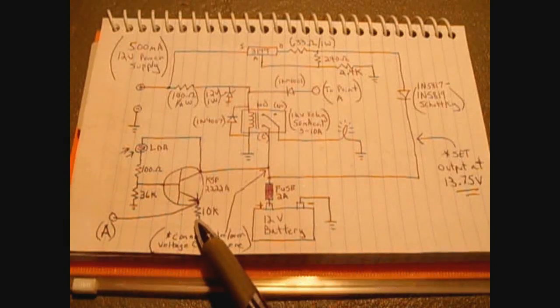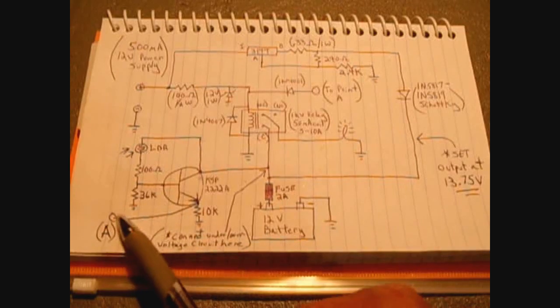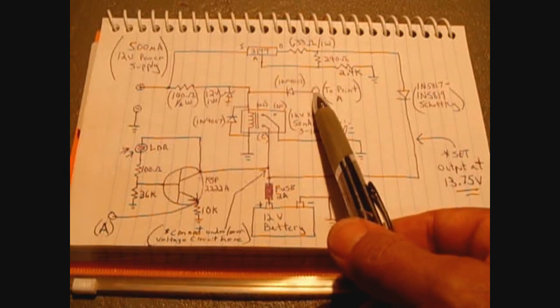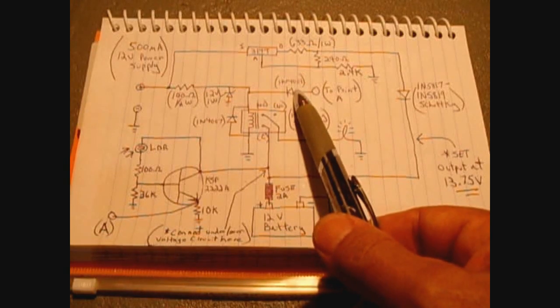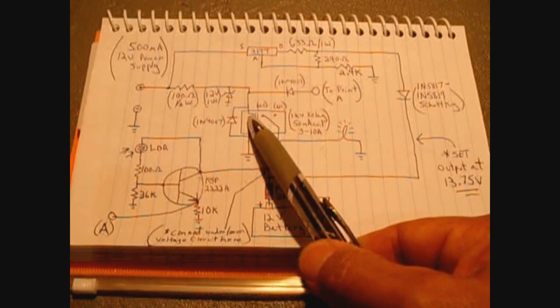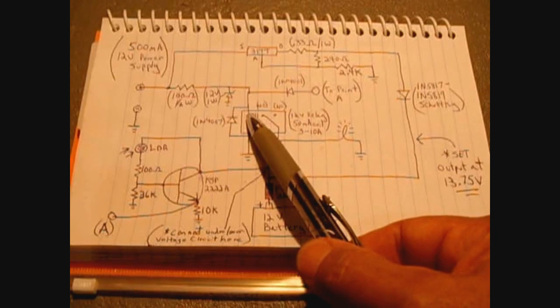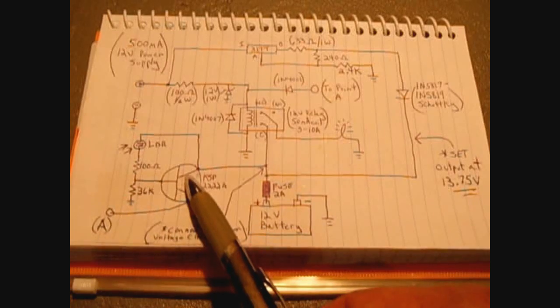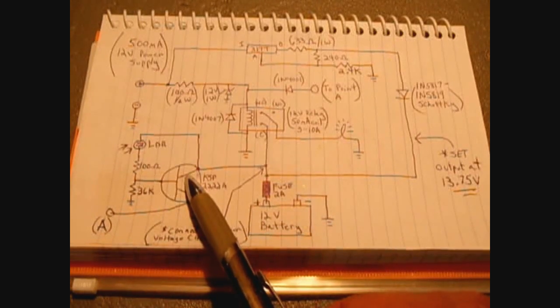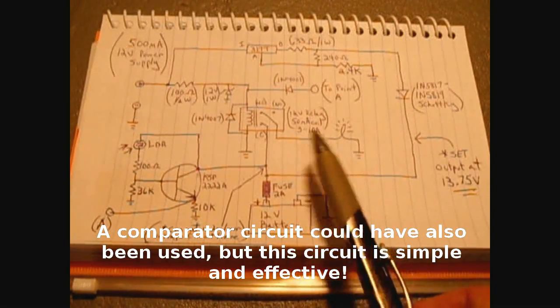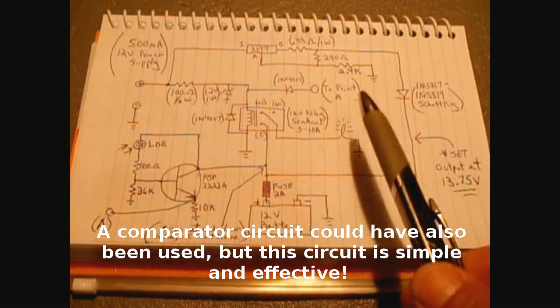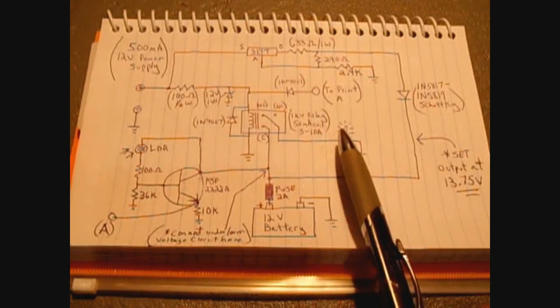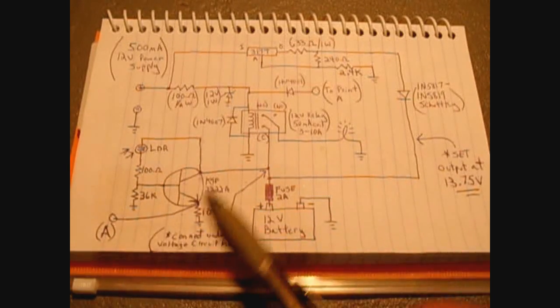Right between the 10K resistor and the emitter, that goes off to point A. Point A connects over to here where it feeds through a 1N4001 diode to the top of the relay coil. The purpose of this portion of the circuit is if the electricity goes out and it's daylight hours, you do not want your lighting to come on. You want to conserve your battery and you do not want the lights active. I only want my lights to activate if it's nighttime, and that's the purpose of this circuit.